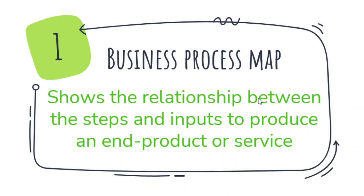A business process map shows the relationship between the steps and inputs to produce an end product or service, such as when a product goes through packaging or when an employee's leave is approved. With a visual representation — drawings and shapes — you can see the process flow within a business. This documentation is concerned with what a business does, why it does what it does, what the standard is for success, who is responsible, and when and where different steps will occur.